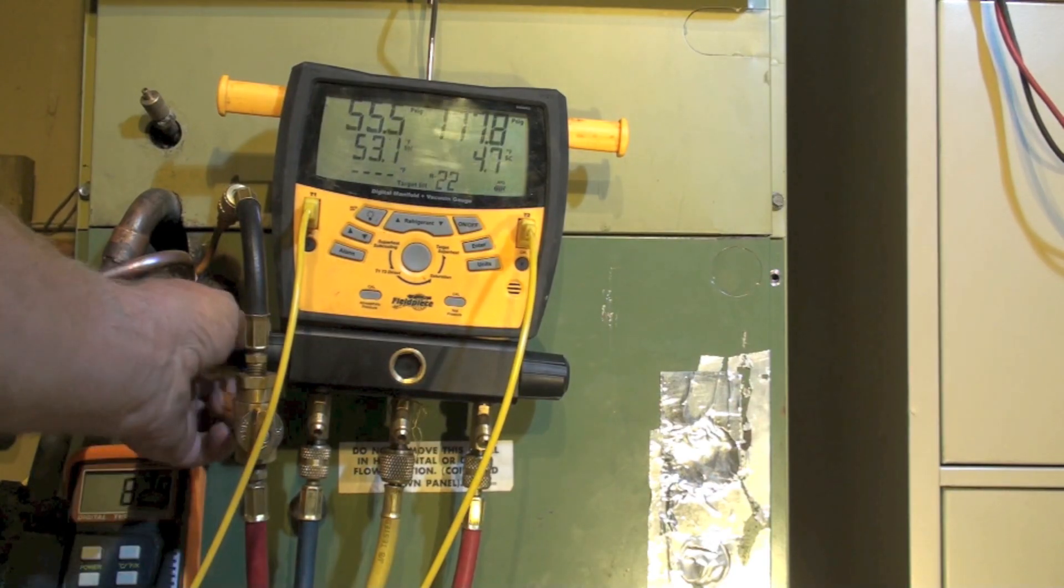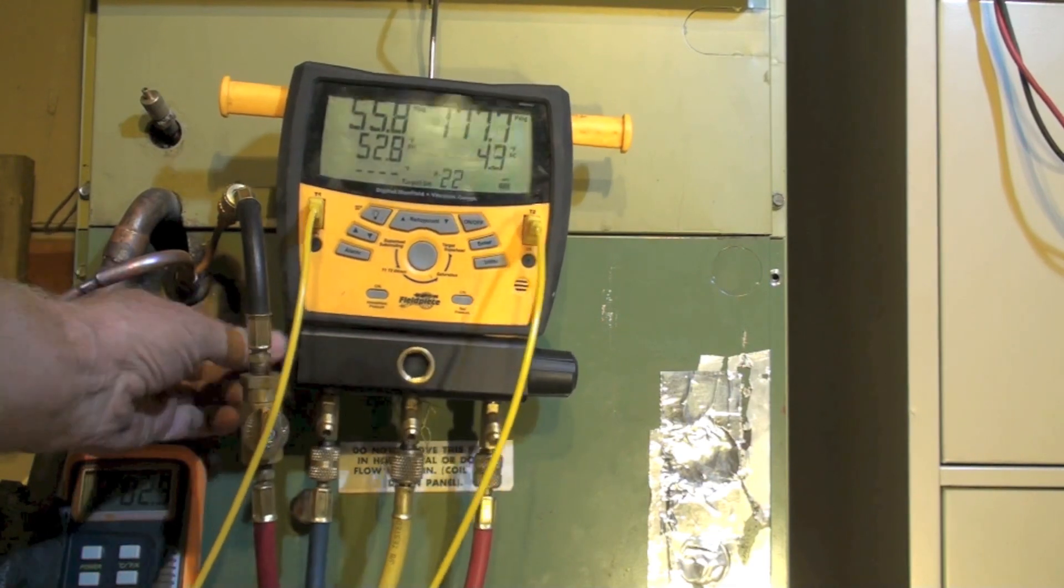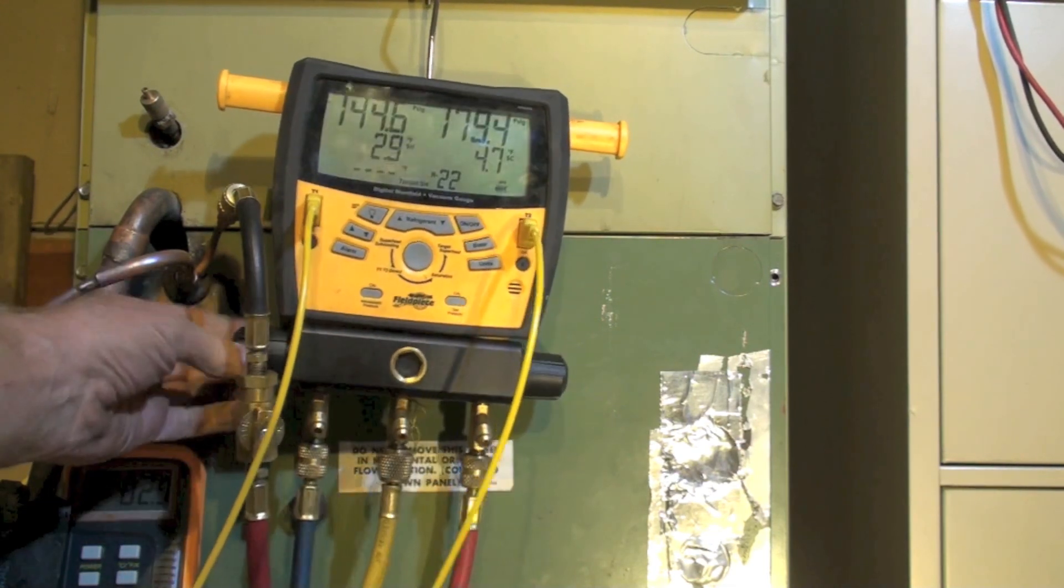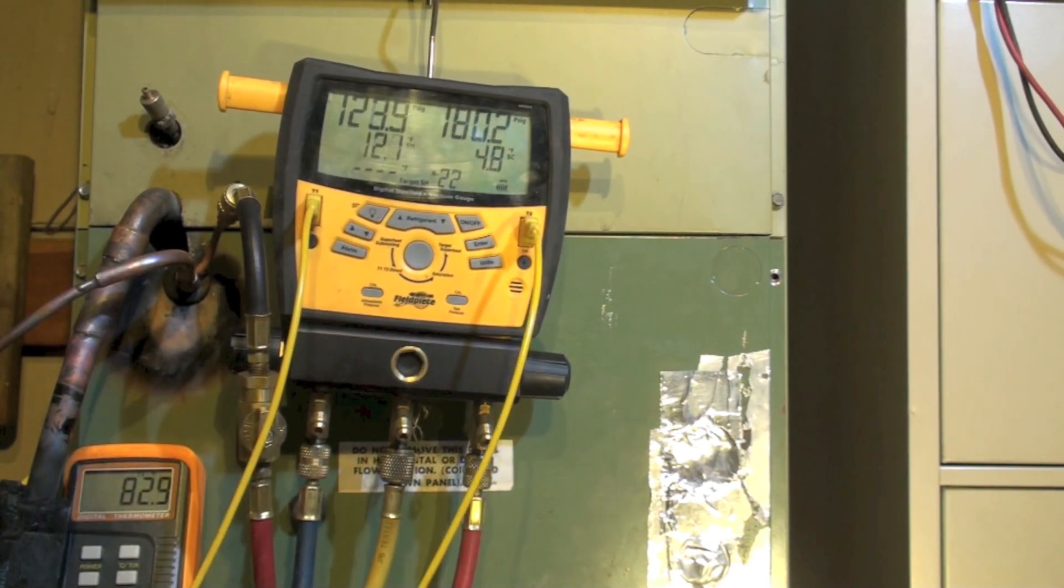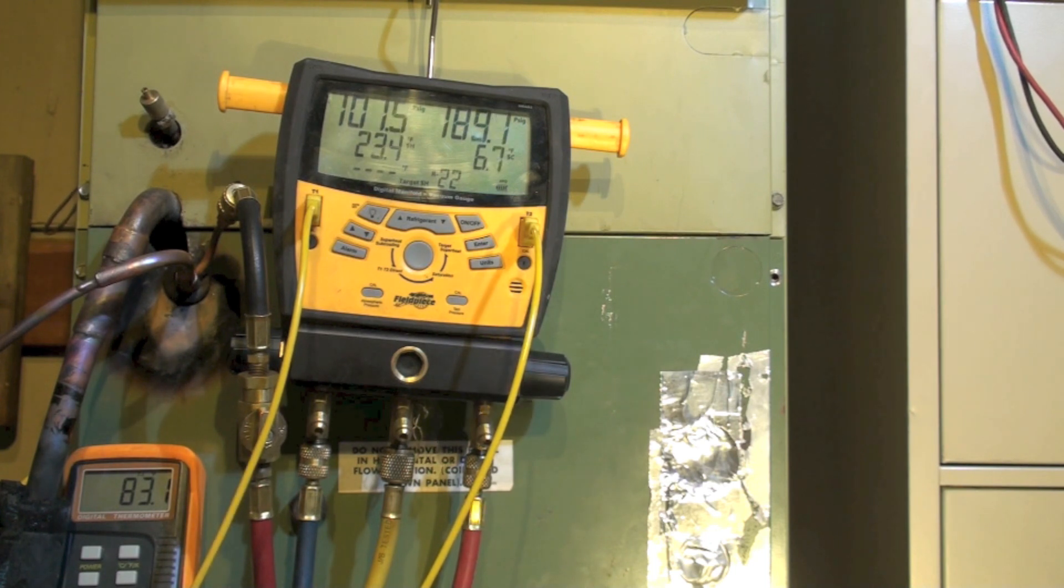Okay, we're adding refrigerant from the low side. I can turn this valve wide open. Listen close, you can hear the compressor load a little bit. Now the low side gauge is not going to make any sense because it's reading somewhere between the refrigerant cylinder pressure and the suction, and we'll have to shut it off every once in a while.